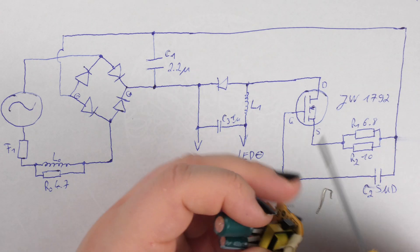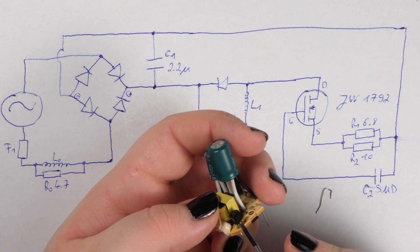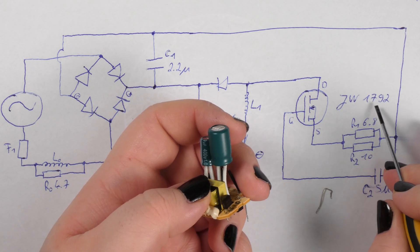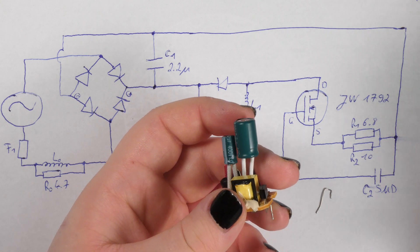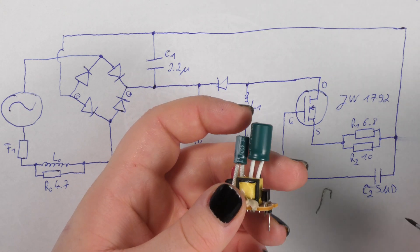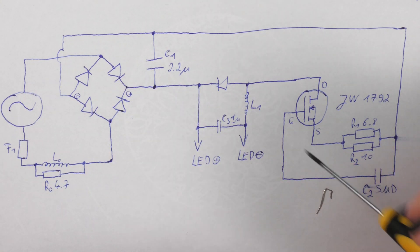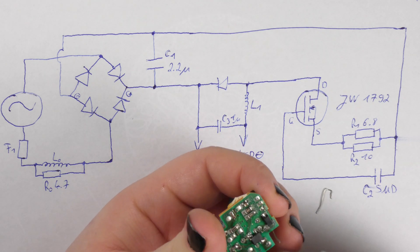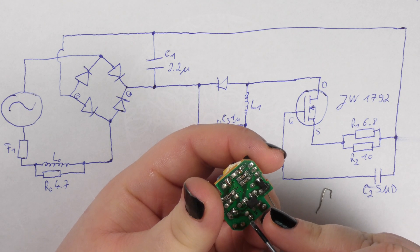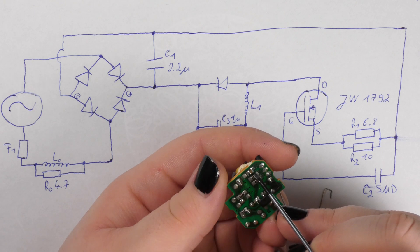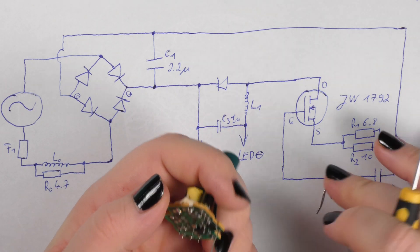This is the JW1792 and this is a 500 volt MOSFET non-isolated LED driver and it's here in buck configuration. The second negative then goes through capacitor C2, capacitor C2 which is a SMD capacitor and is, where is it, this one over here. Now this is unmarked so I don't know the value.